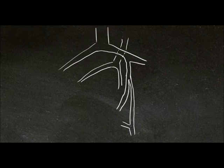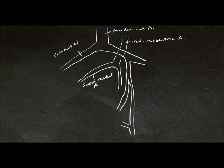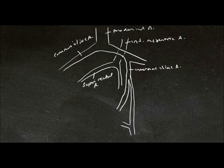Here we have our inferior mesenteric artery and our superior rectal artery. And then we have the abdominal aorta here, and one of our common iliac arteries branching off this. We have the internal iliac artery, and this is branching into the internal pudendal artery and the middle rectal artery.